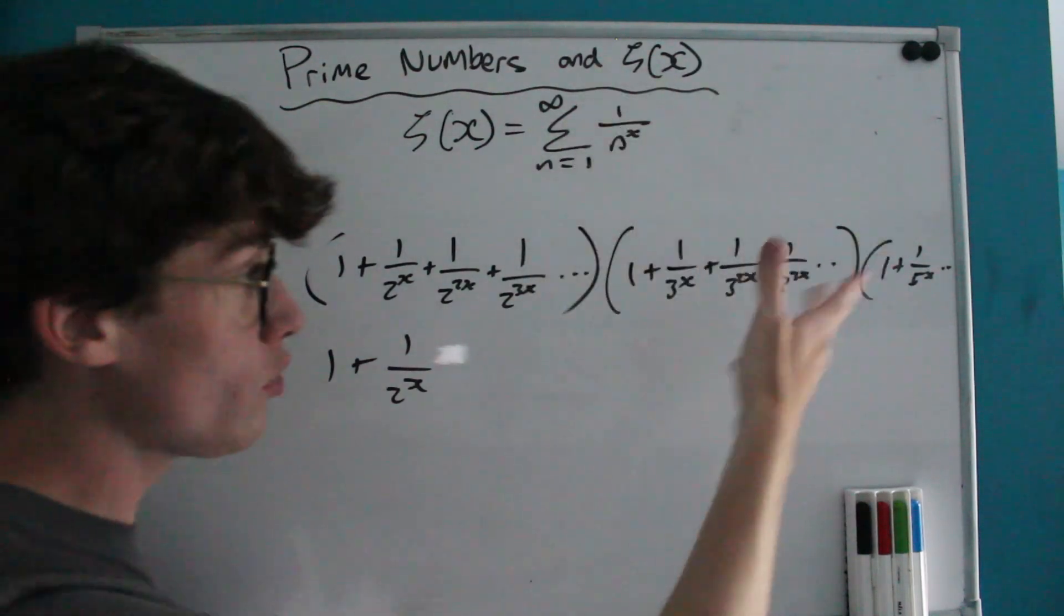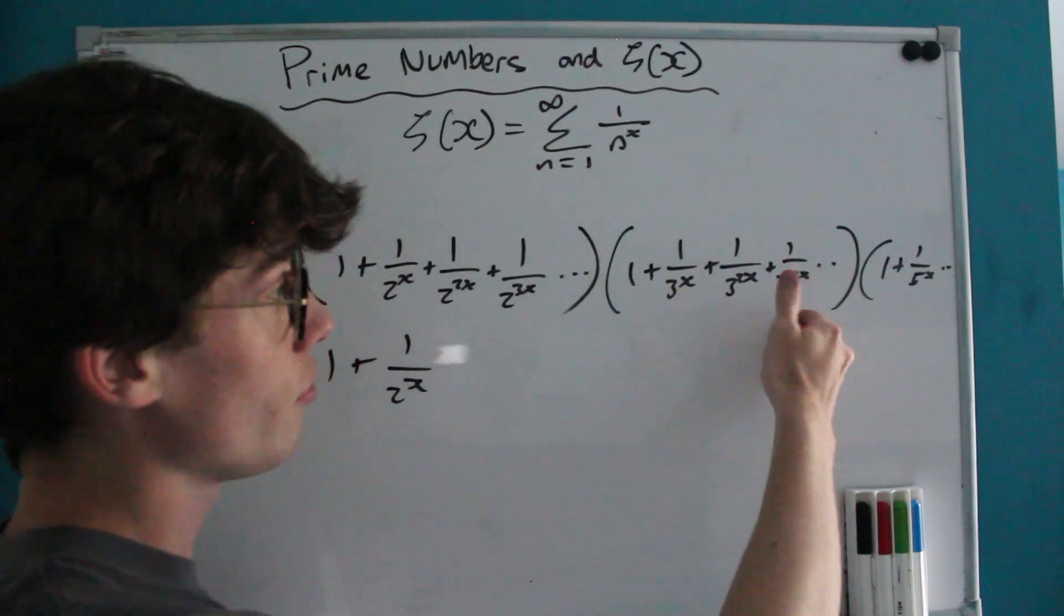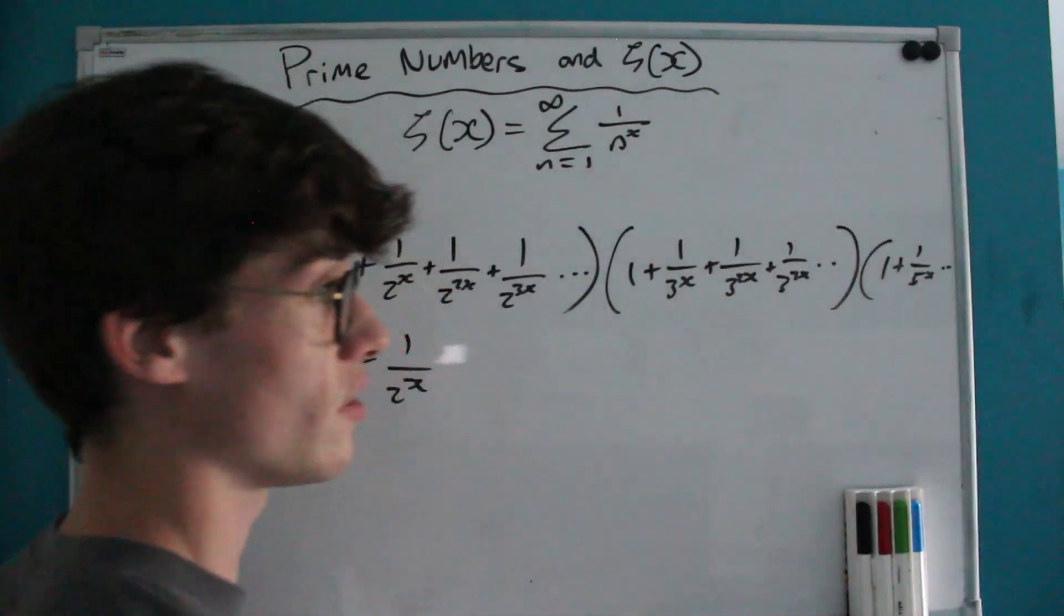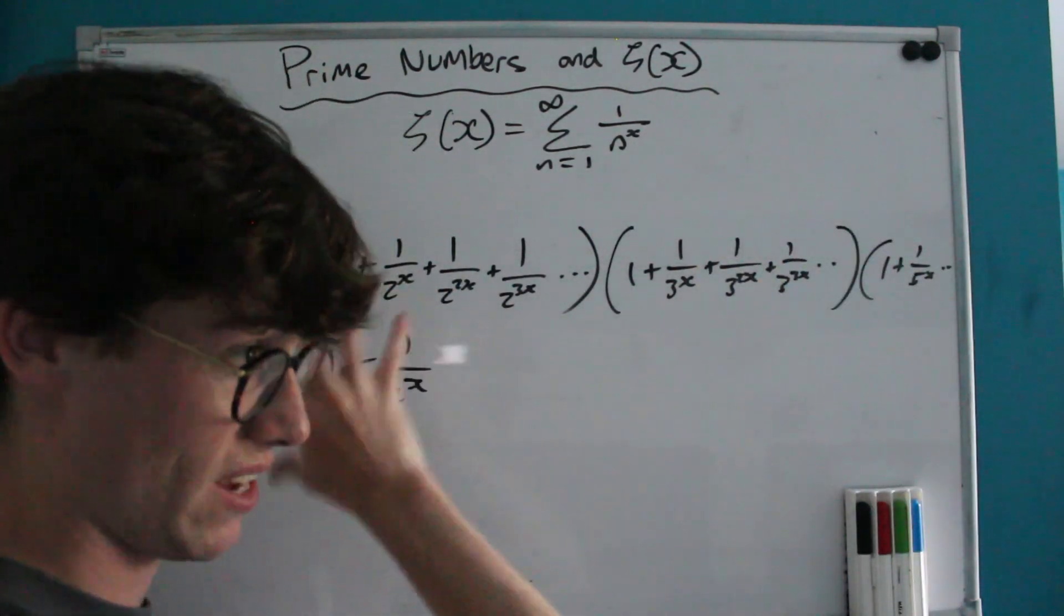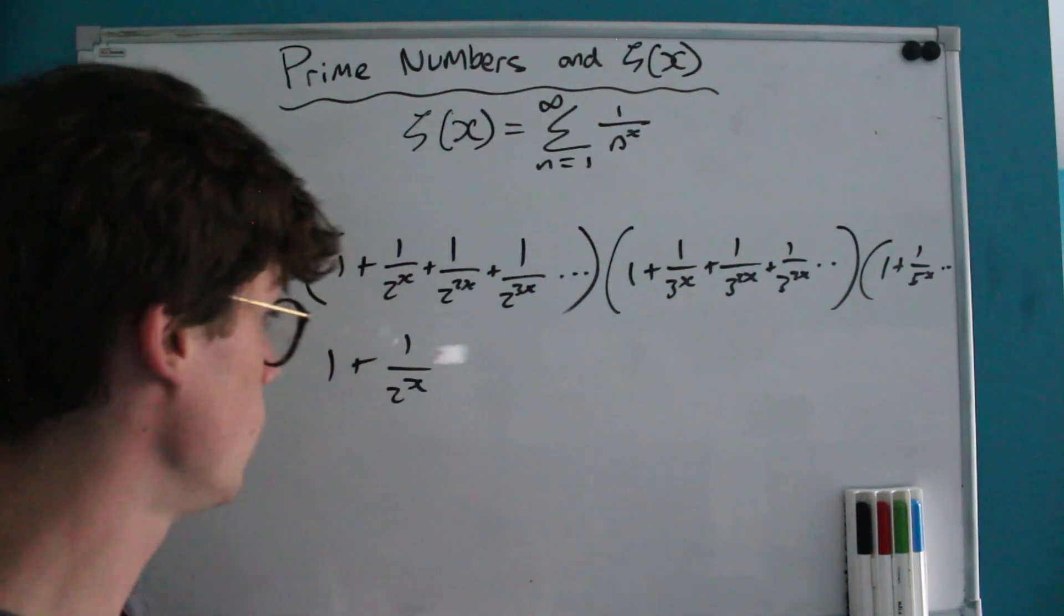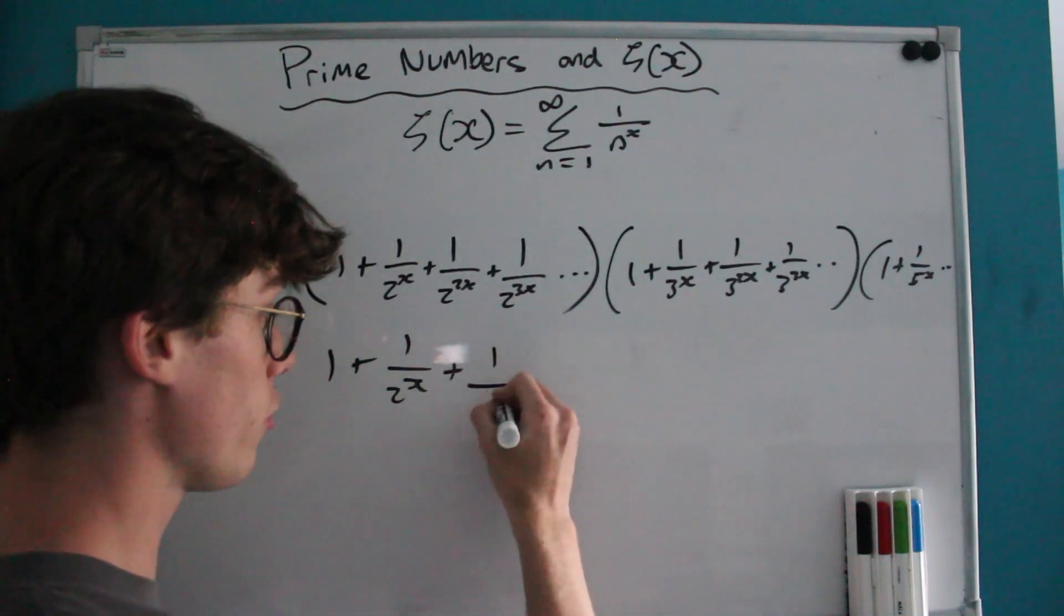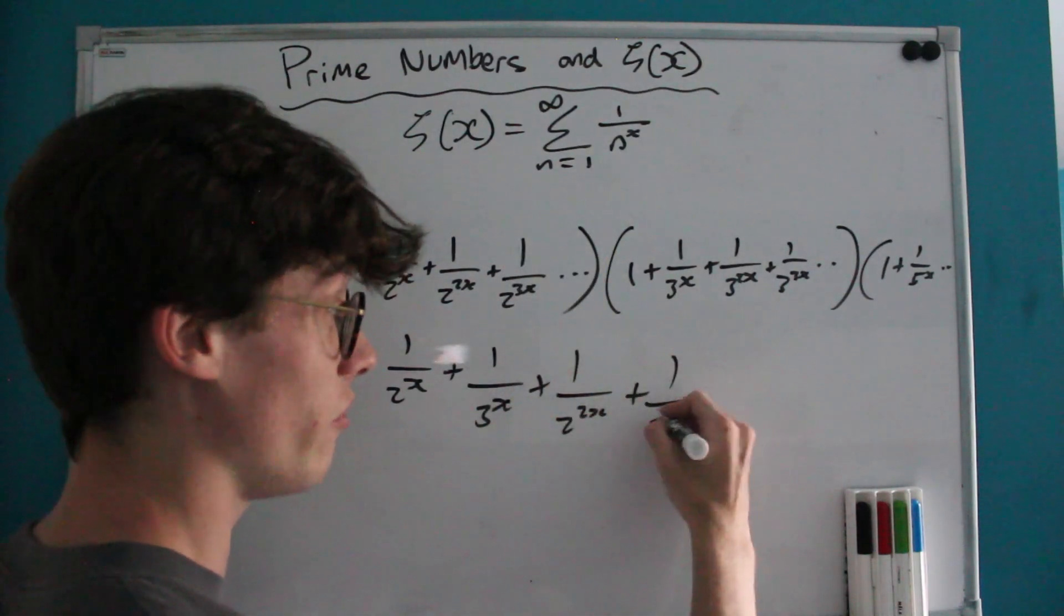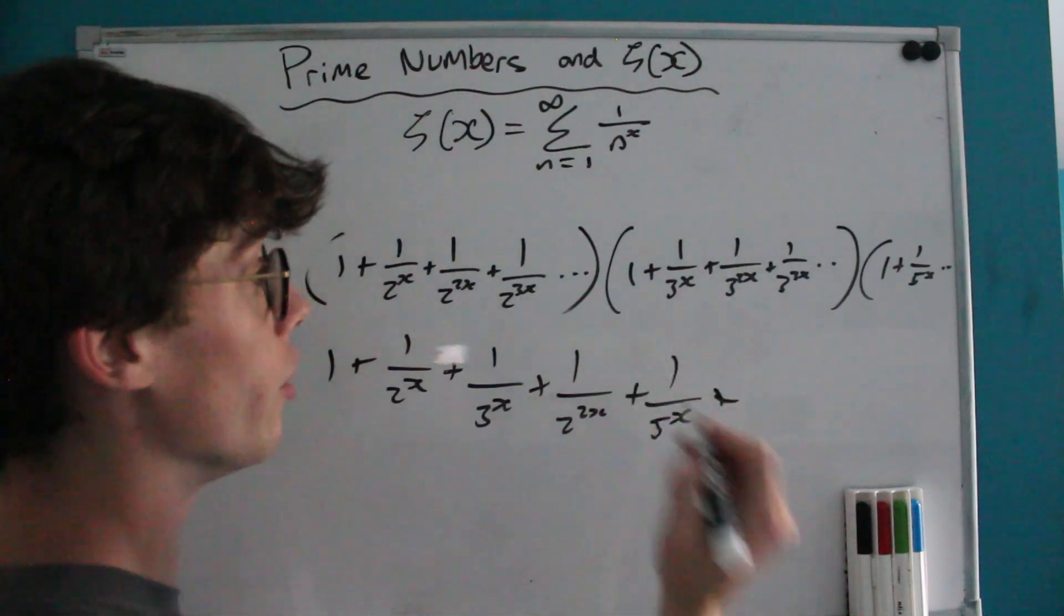So that's fine that means we're also going to be able to capture all of our powers of 3 because every time that each term in this series multiplies by a 1 at the start of our series we're going to have it captured. But what we've got to consider is what about the composites? Well we know we've got 1 over 3 to the x, we know we've captured 1 over 2 to the 2x, we know we've captured 1 over 5 to the x, what about 1 over 6 to the x?